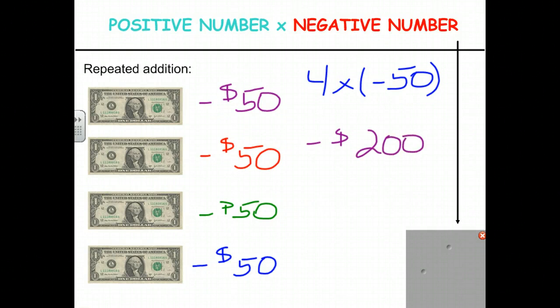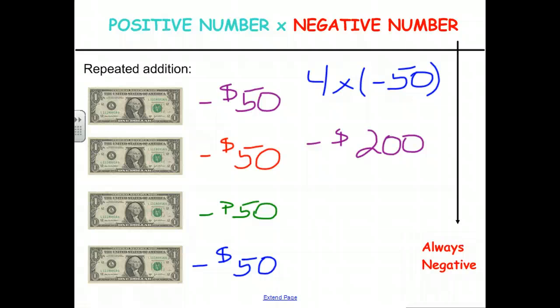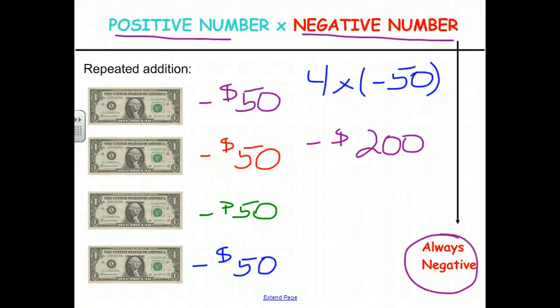So if we think about a positive number times a negative number as taking away money a repeated number of times, no matter how many times we take something away — as long as we're doing it a positive number of times — we're still going to be taking away money. Therefore a positive number of things taken away results in things taken away: a positive times a negative is always negative.